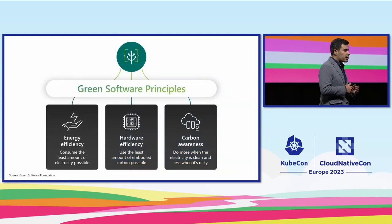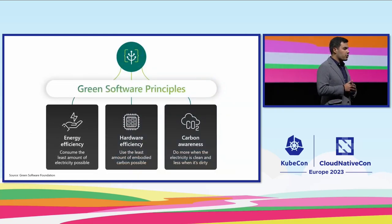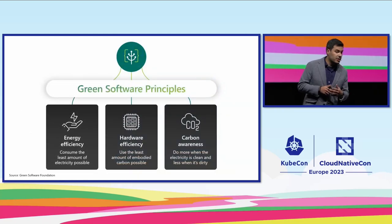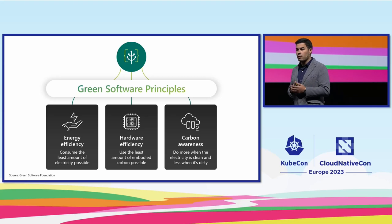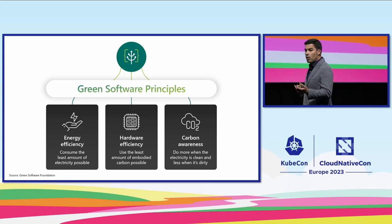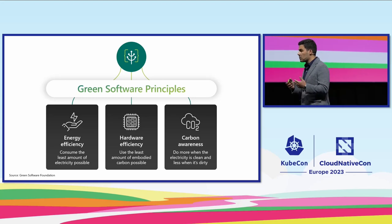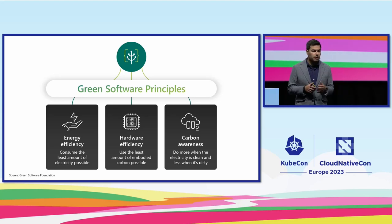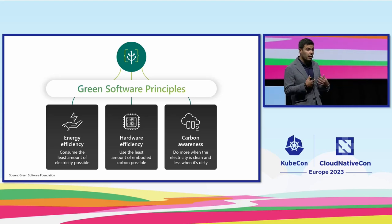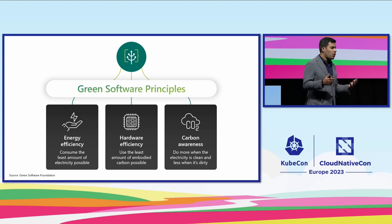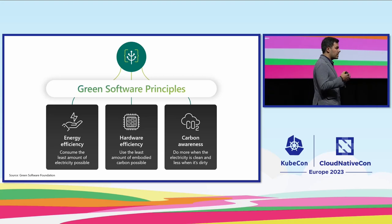So let's change that, and let's start by talking about the Green Software Principles, as defined by the Green Software Foundation. Number one, energy efficiency. Simply put, use the least amount of energy possible. For us, that's all about making sure our code is efficient.